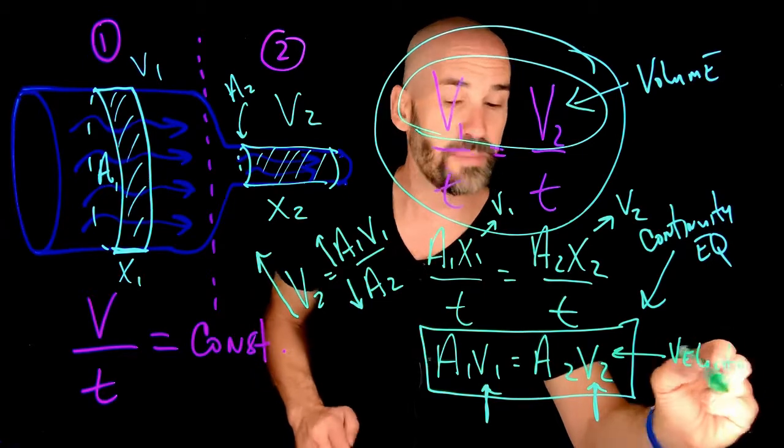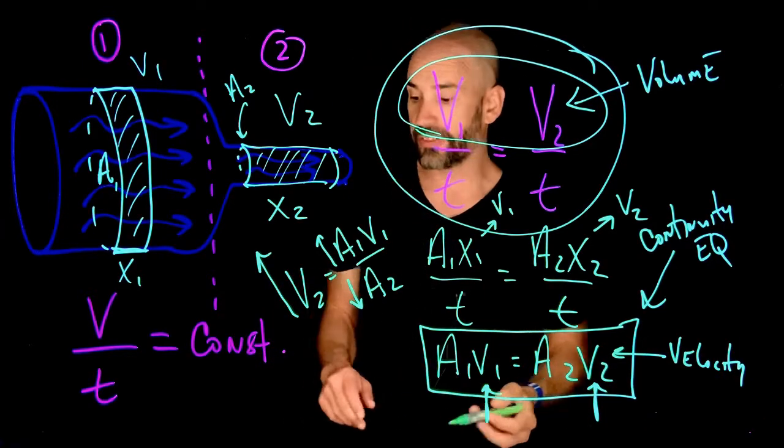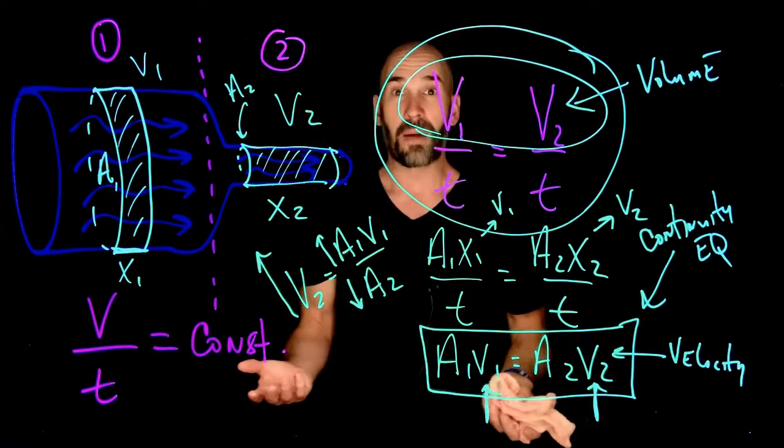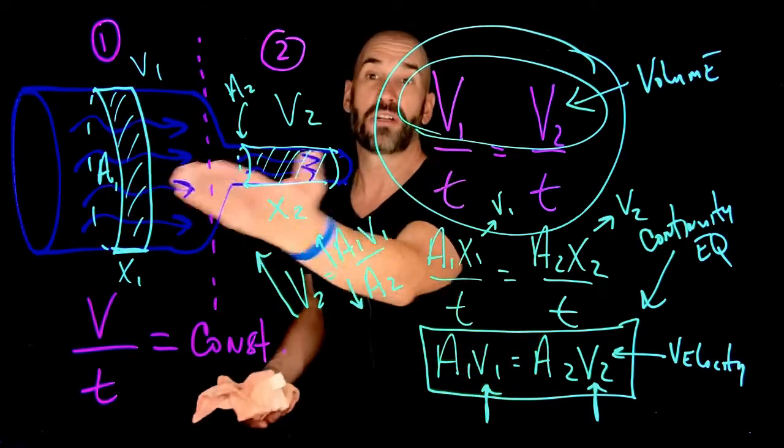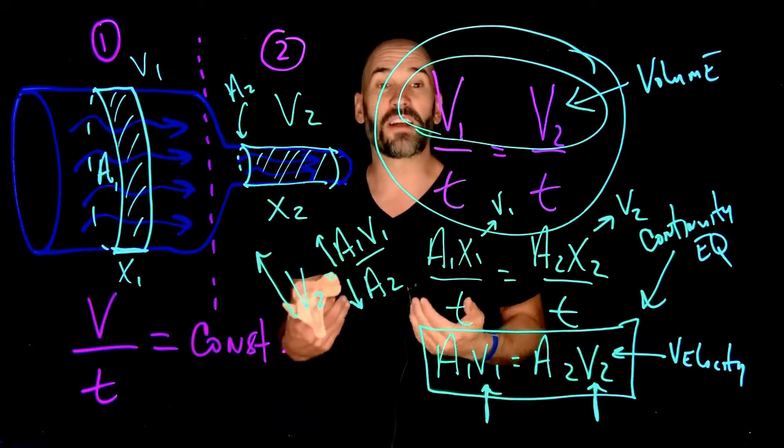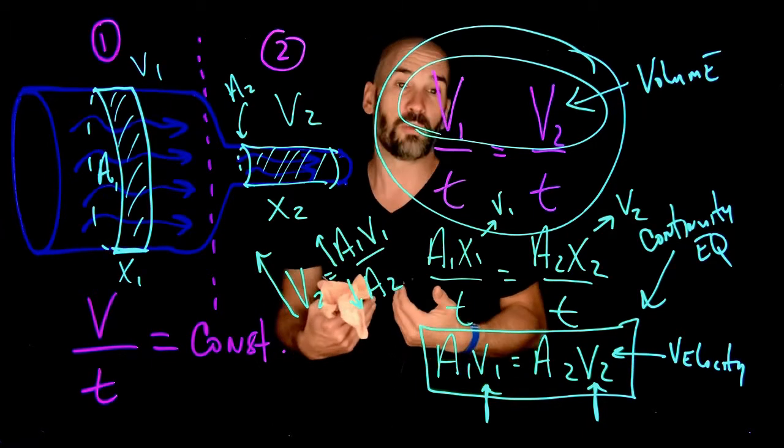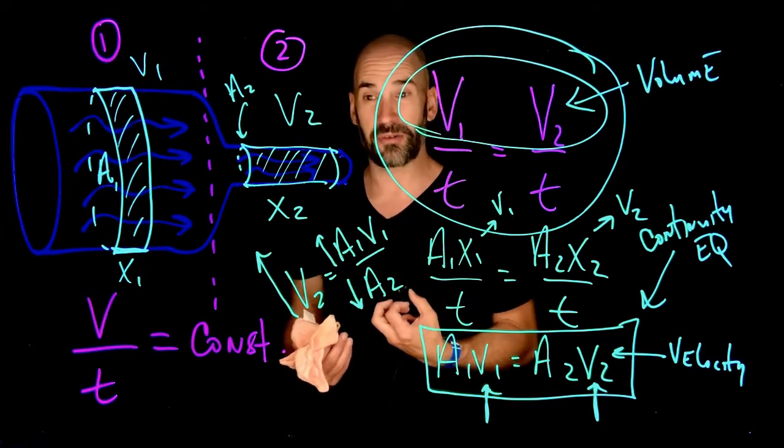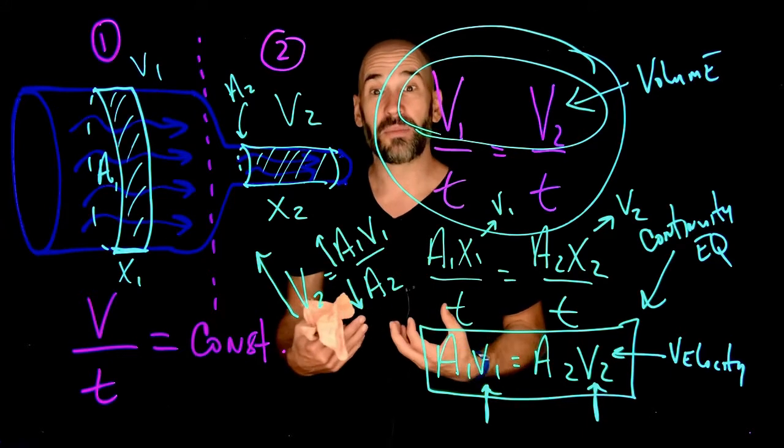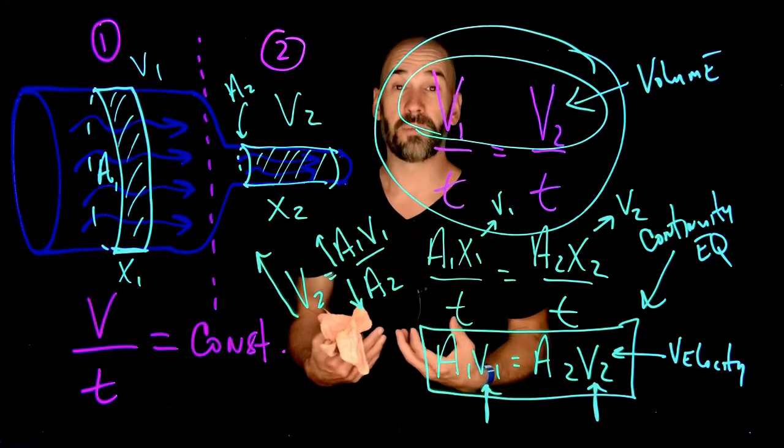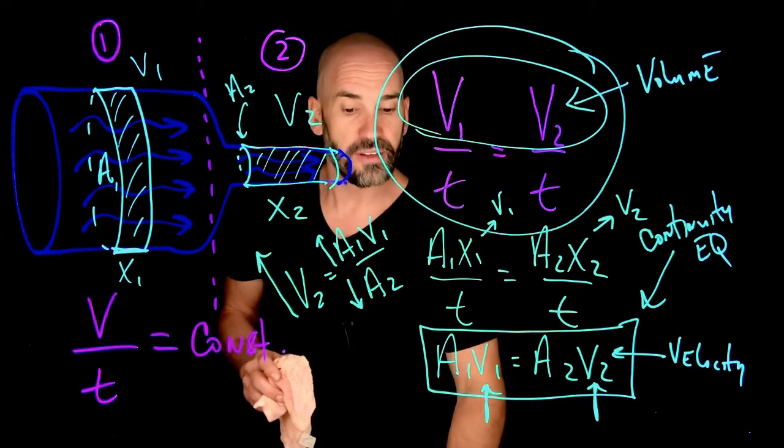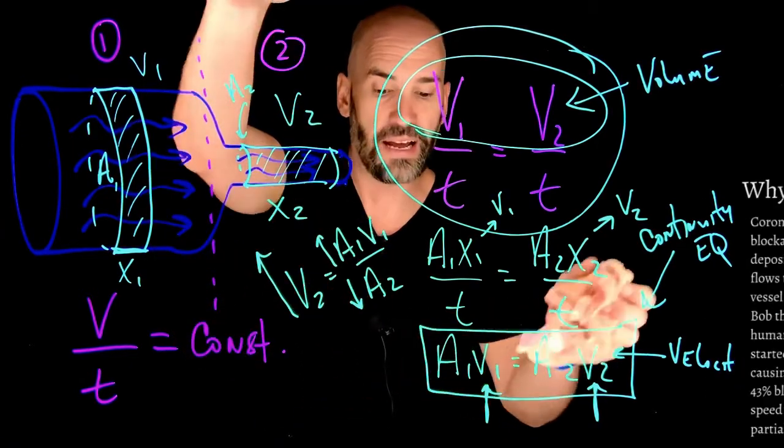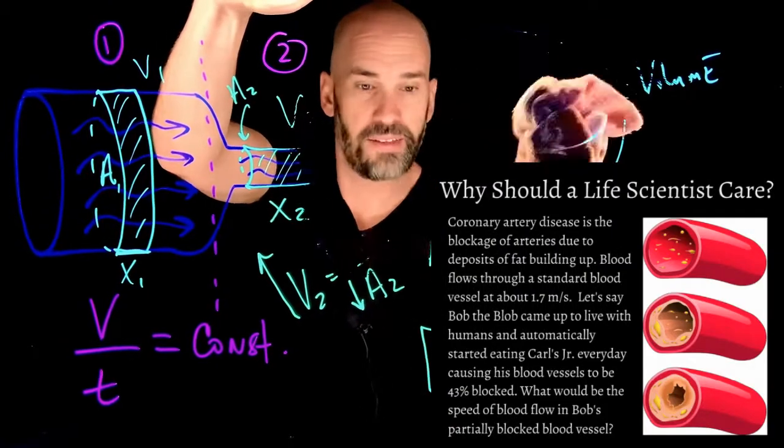Now, this has a lot of implications for health and life sciences, because basically, our veins and arteries are a bunch of pipes like this. And so if you start constricting them, if a certain amount of buildup starts to happen in those arteries, your blood is going to be flowing much faster. It's going to be more stress on the body. So let's take a look at it, you can look at this next slide, this is why should a life scientist care about this.